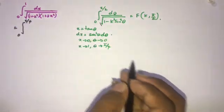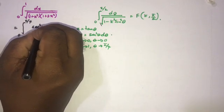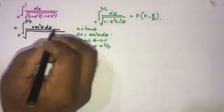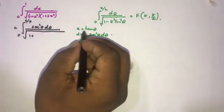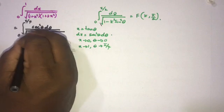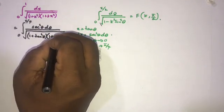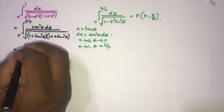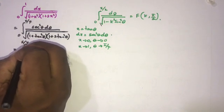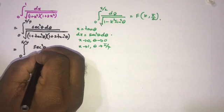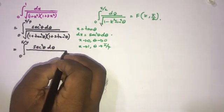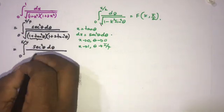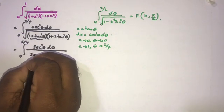So we can plug in here. The integral from 0 to π/4: dx becomes sec²(θ) dθ, over the square root of 1 plus x² — where x = tan(θ) — times 1 plus 2 tan²(θ). We simplify: 1 plus tan²(θ) equals sec²(θ), so the square root of sec²(θ) is sec(θ), giving sec(θ) in the denominator factor.